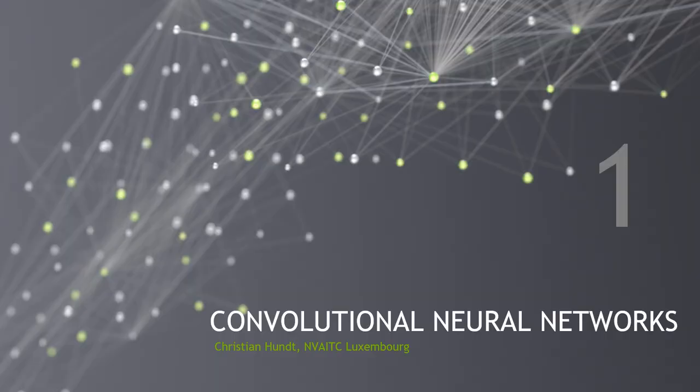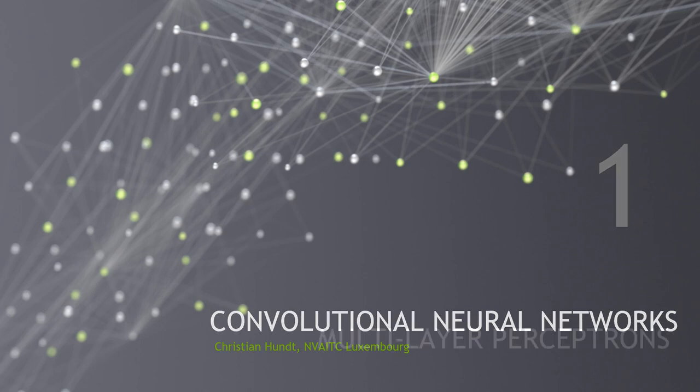The main ingredient of convolutional neural networks are, of course, convolutions. But before we can talk about how to convolve an image with a filter, I'd like to talk about multilayer perceptrons, or MLPs.